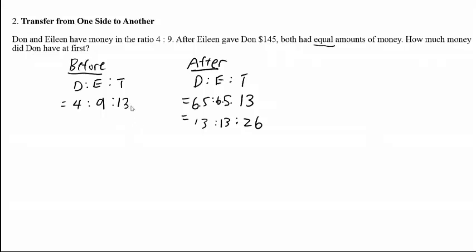Because I want to make the total numbers match, the before model also needs to be multiplied by 2. So I get 8 to 18 with a total of 26.